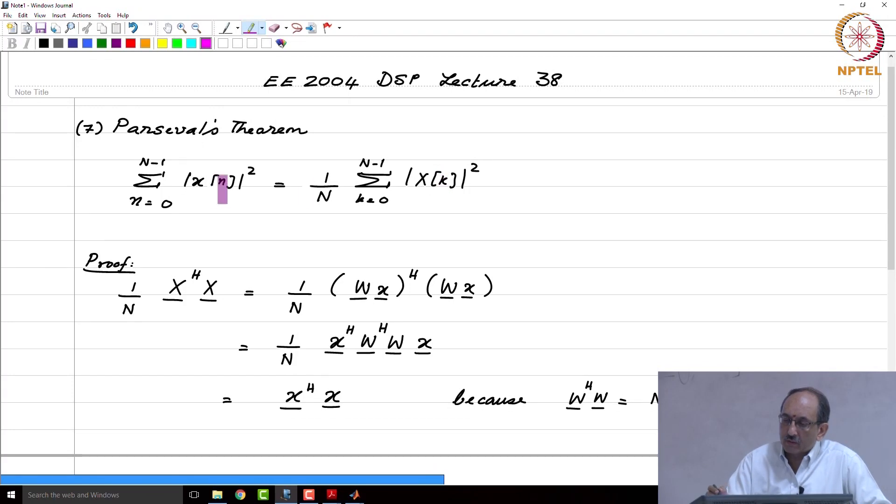And all it says is, at least in this form, the norm in the time domain is a scaled version of the norm in the frequency domain.